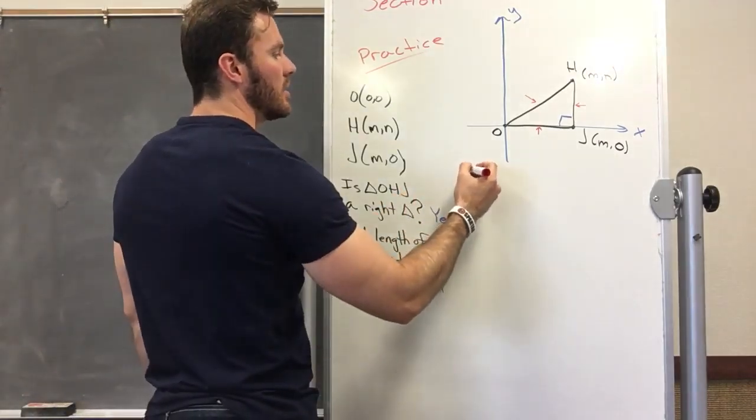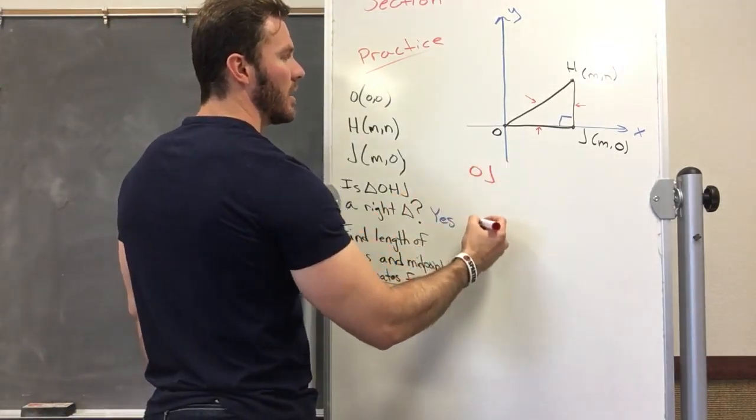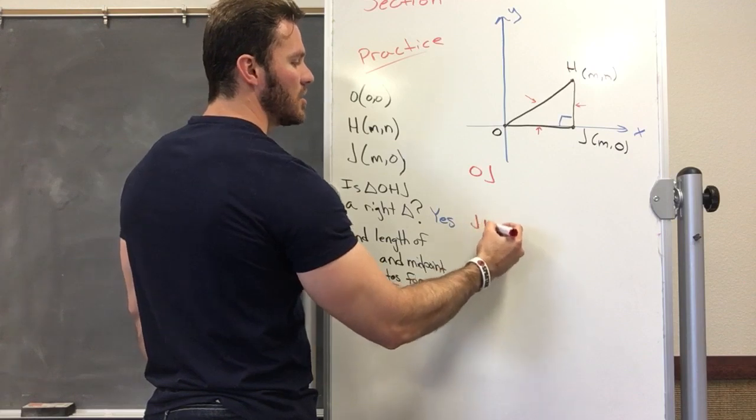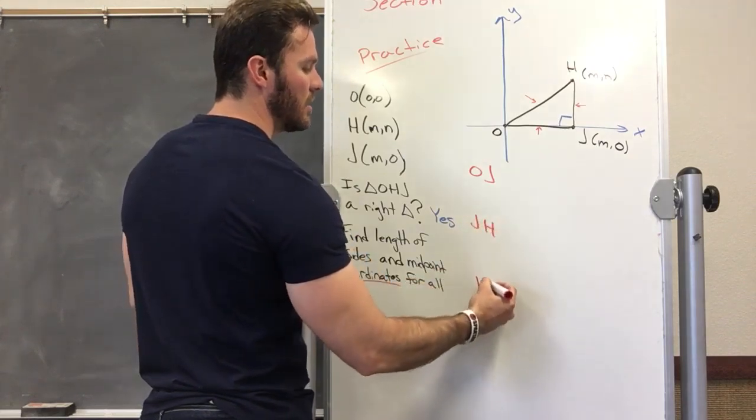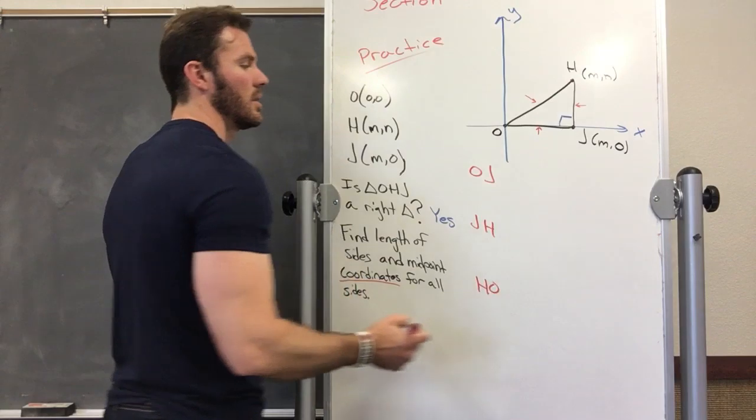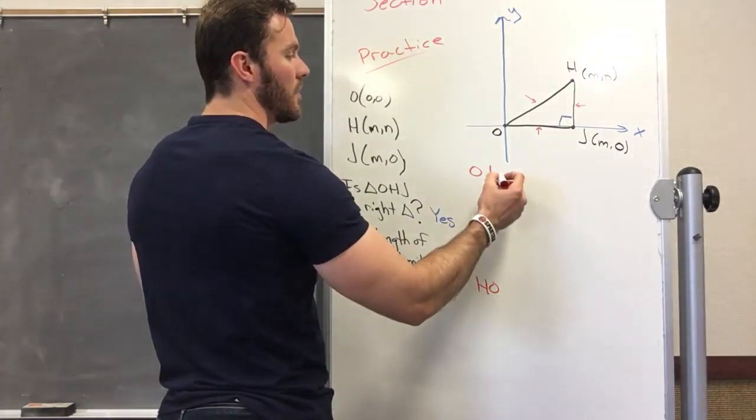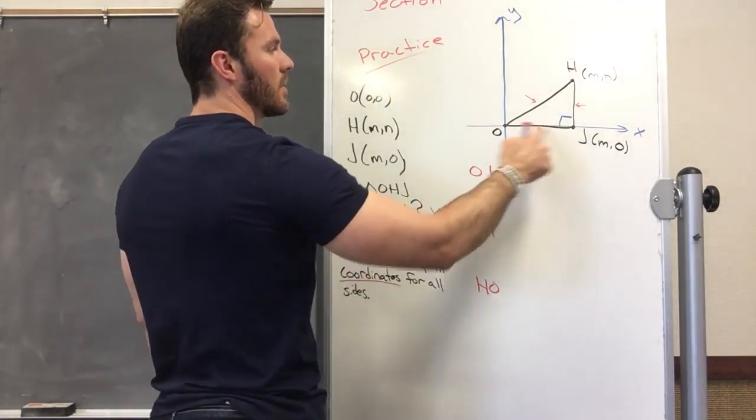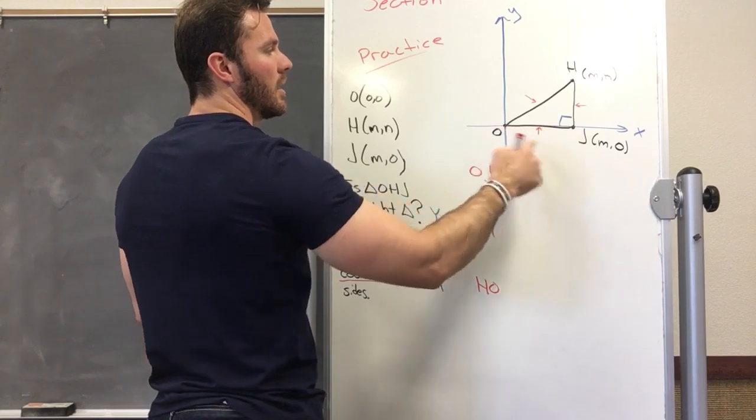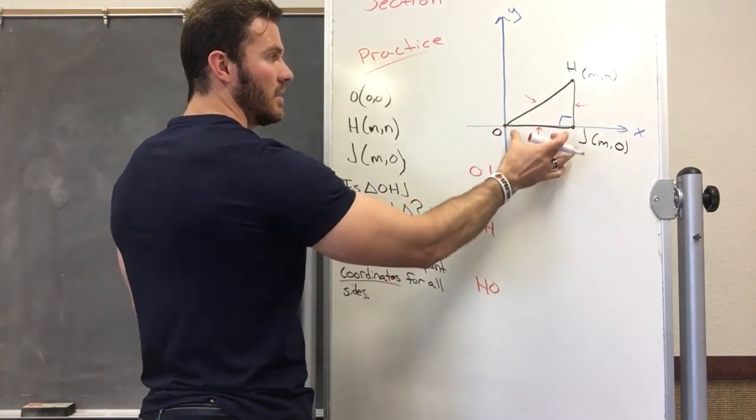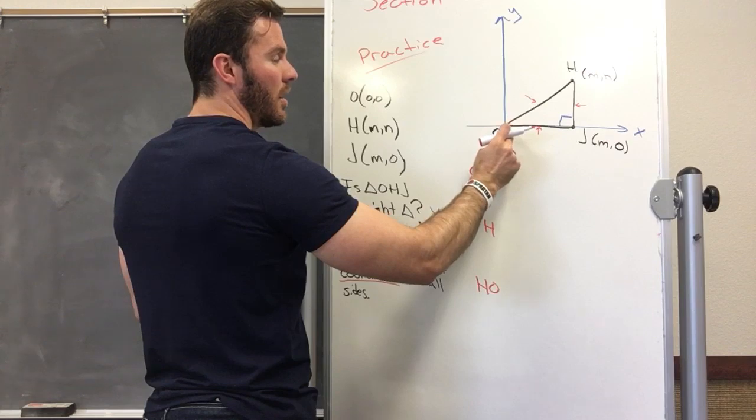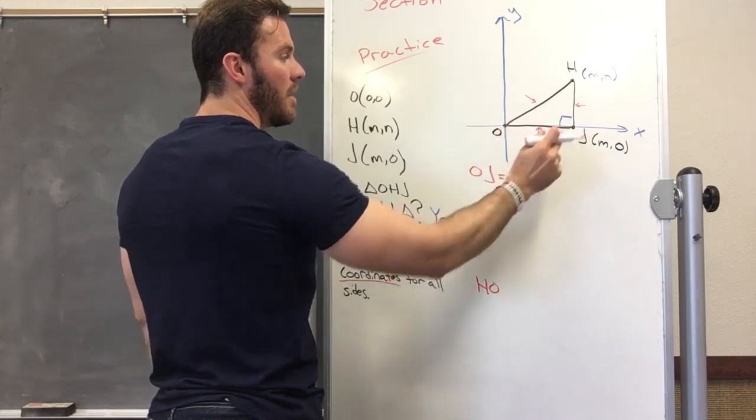So OJ—this one right here. The length of it: it didn't go anywhere on the Y, but it did on the X. It went over M units, so the length of it is M.